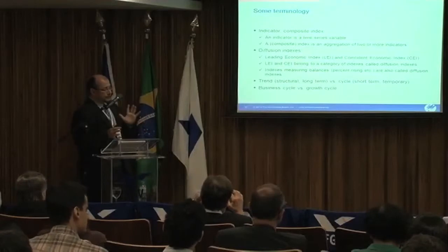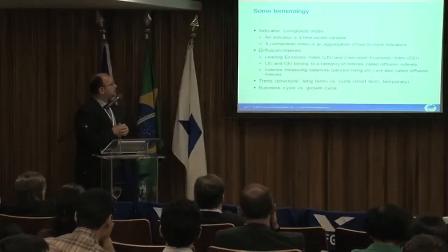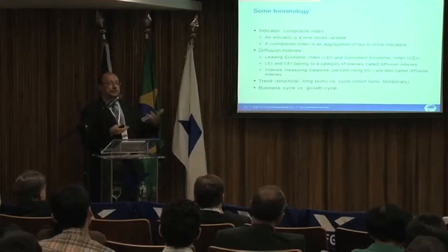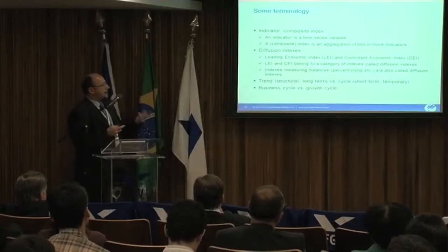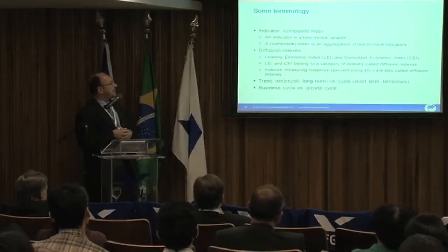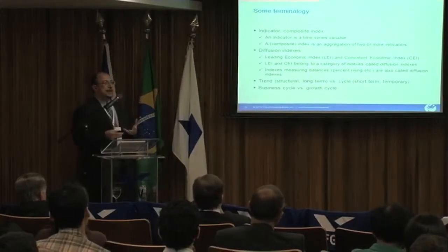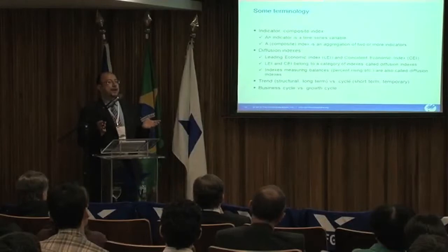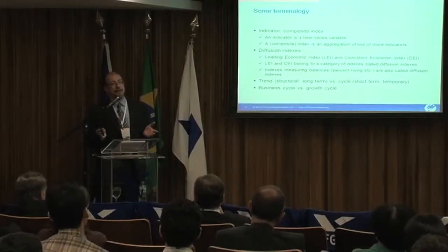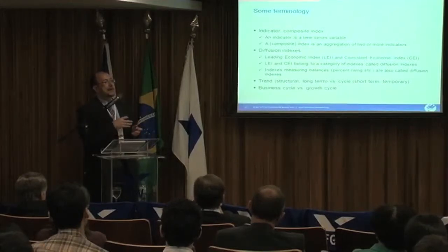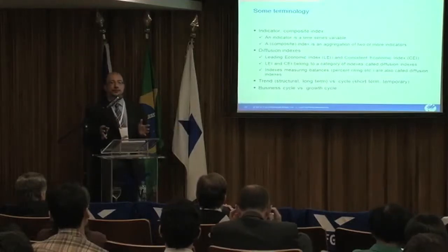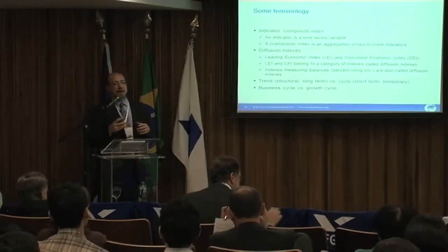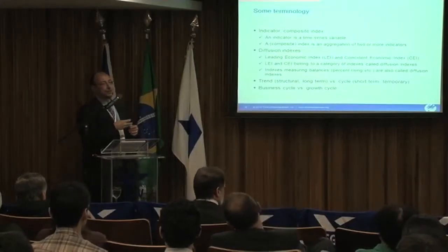Just a couple of points of terminology. An indicator is a time series variable; an index is a composite — a weighted average of indicators. I'll talk about the LEI and CEI: the Leading Economic Index and the Coincident Economic Index. These are types of diffusion indexes — they attempt to measure how widespread a certain movement is across many indicators, capturing the idea that many indicators show the same sequence of movements around the same time.